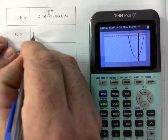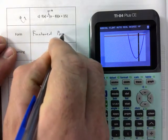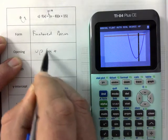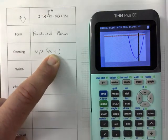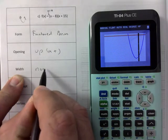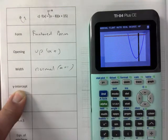So what form is this in? This is factor, the factor form, opening is up because a is positive. Just looking at the sign of a. Okay. Width is normal. And why is that? Because a is exactly equal to one.